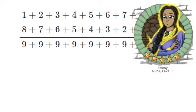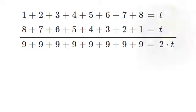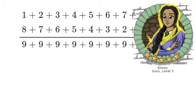There are eight nines, so that's seventy-two altogether, which is equal to two times t, and so t is equal to... Thirty-six!